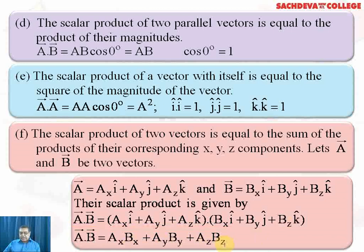Here, A_x is the component of vector A along the x-axis, B_x is the component of vector B along the x-axis, and similar interpretations apply for A_y, B_y, and A_z, B_z.